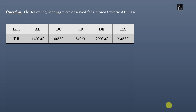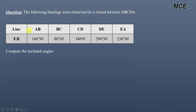Hello and welcome back to Master Civil Engineering. In this video you will learn how to find the included angles for a closed traverse when you know the fore bearings of various lines. The question states that the following bearings were observed for a closed traverse ABCDEA, made up of five lines AB, BC, CD, DE, and EA, with fore bearings shown in the table. We have to calculate the included angles of this closed traverse.